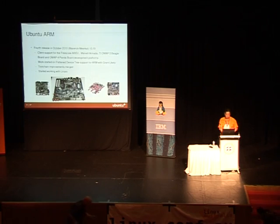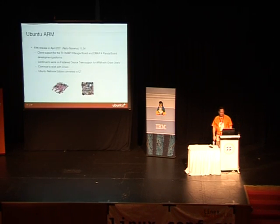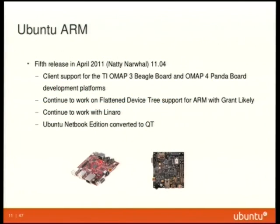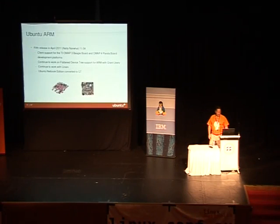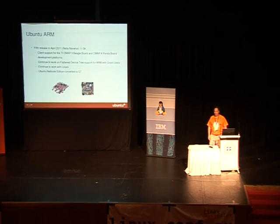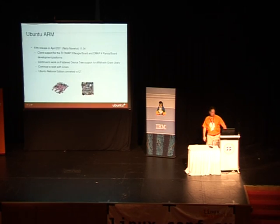The fifth release, 1104, we dropped support for a lot of things but kept OMAP3 and OMAP4. TI did something really good — OMAP3 is fully upstream in the mainline kernel, so for a distribution to support it you just pull down the mainline kernel, tell it you're compiling for OMAP3, and you're done. OMAP4 is still on its way upstream. We continue to work with Grant Likely on flattened device tree — that's a multi-year effort. We also converted the Ubuntu netbook edition to a Qt backend.